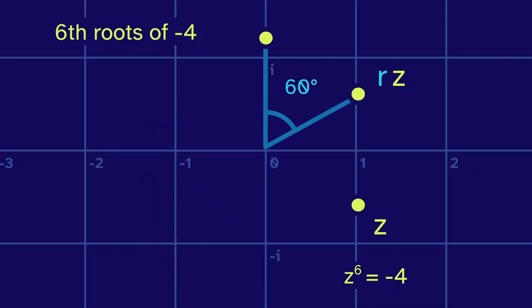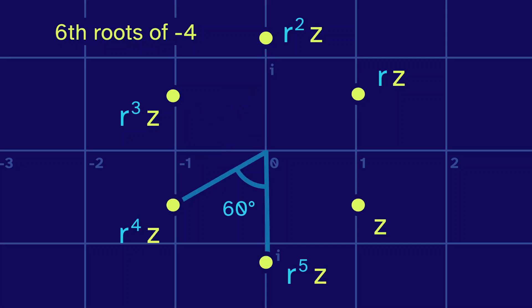And if we rotate again, we get r-squared z. This is also a sixth root, since r to the twelfth is a 720 degree rotation, which also cancels out. And the same goes for r-cubed z, r to the fourth z, and r to the fifth z. All of these roots are just rotated versions of each other.